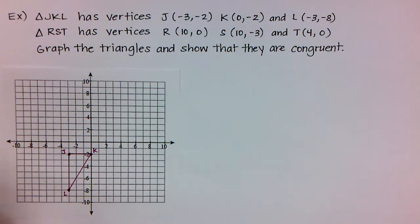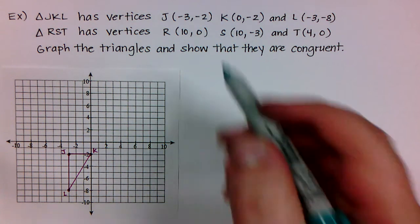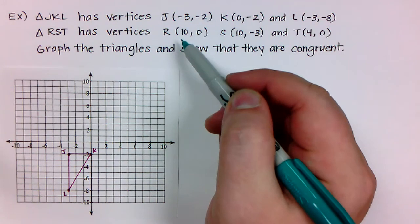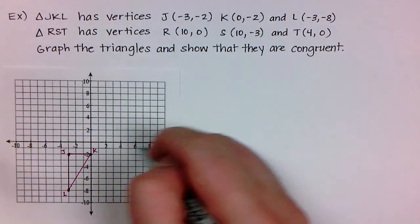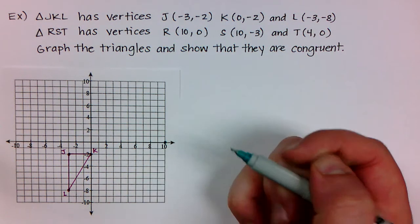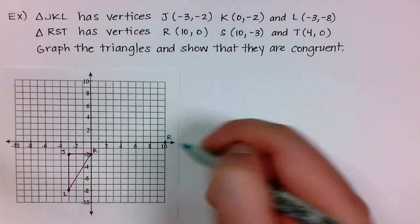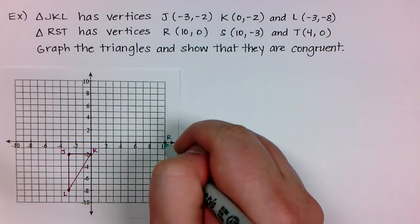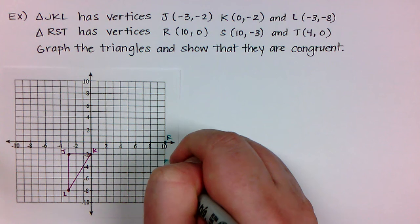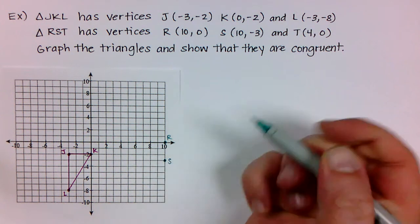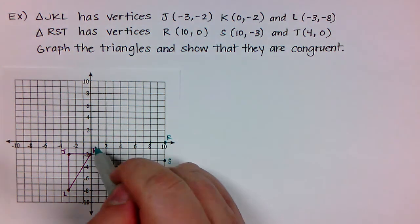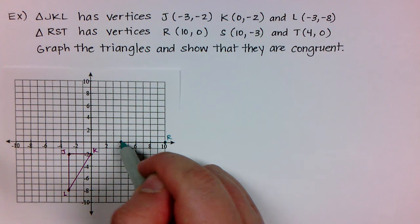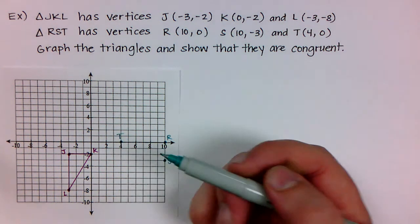Now let's graph triangle RST. Point R is at (10, 0), all the way at 10. Point S is at (10, −3), so 10 over and down negative 3. And point T is at (4, 0). I'll connect the dots to complete triangle RST.